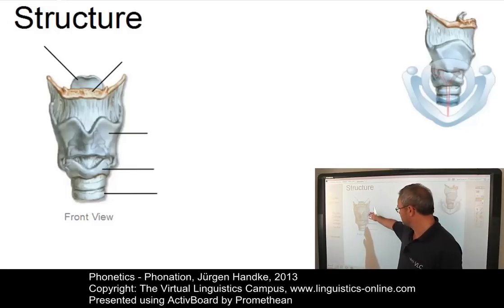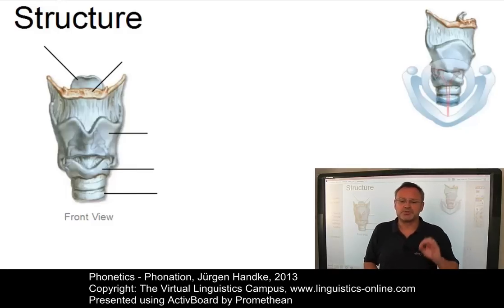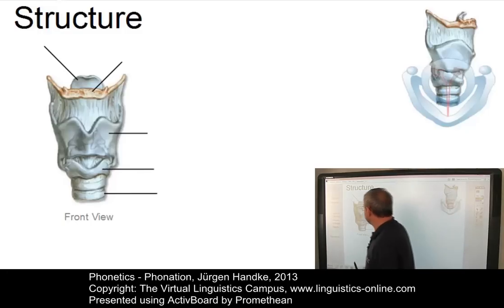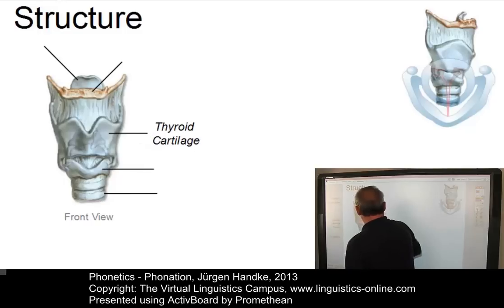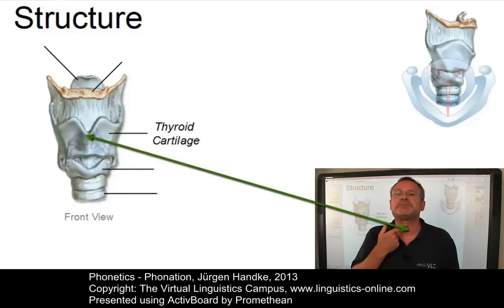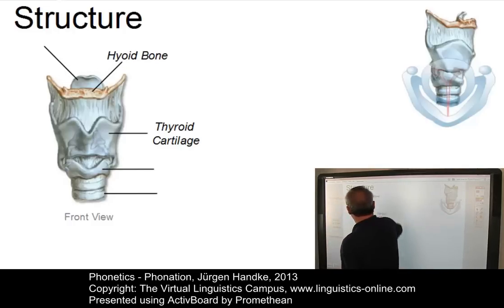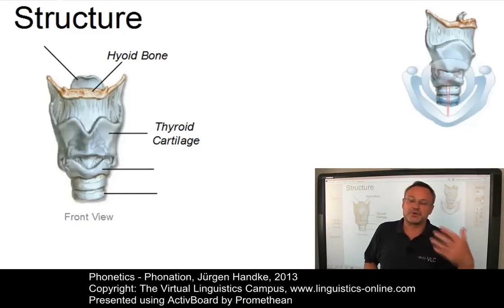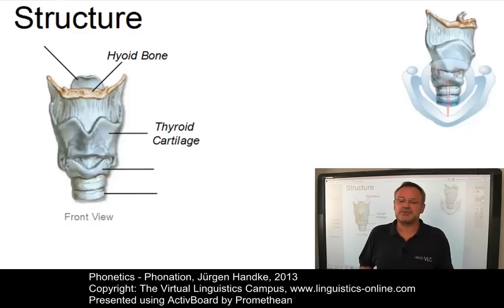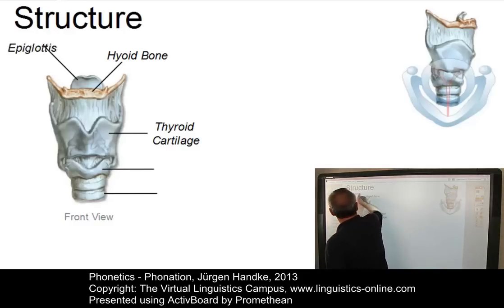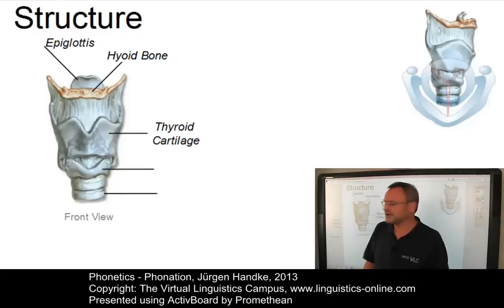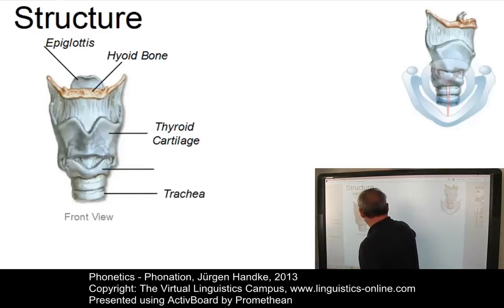Seen from the front, as you can see over here, the most prominent piece of the larynx is the thyroid cartilage. Part of it forms Adam's apple, which you can see even from the outside. The horseshoe shaped hyoid bone, here at the top, lies on top of the larynx, elevating the larynx during swallowing and speech. Additionally, we can see the epiglottis over here on top, and of course the trachea, down here, with the cricoid cartilage on top.